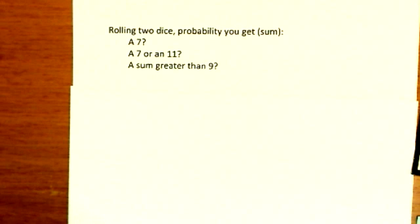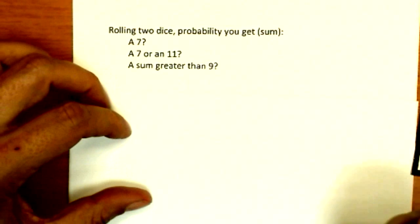Okay, so more probability involving dice. Rolling two dice, what is the probability to get a sum of seven, or seven or an eleven? So this is kind of like playing craps. A sum greater than nine.